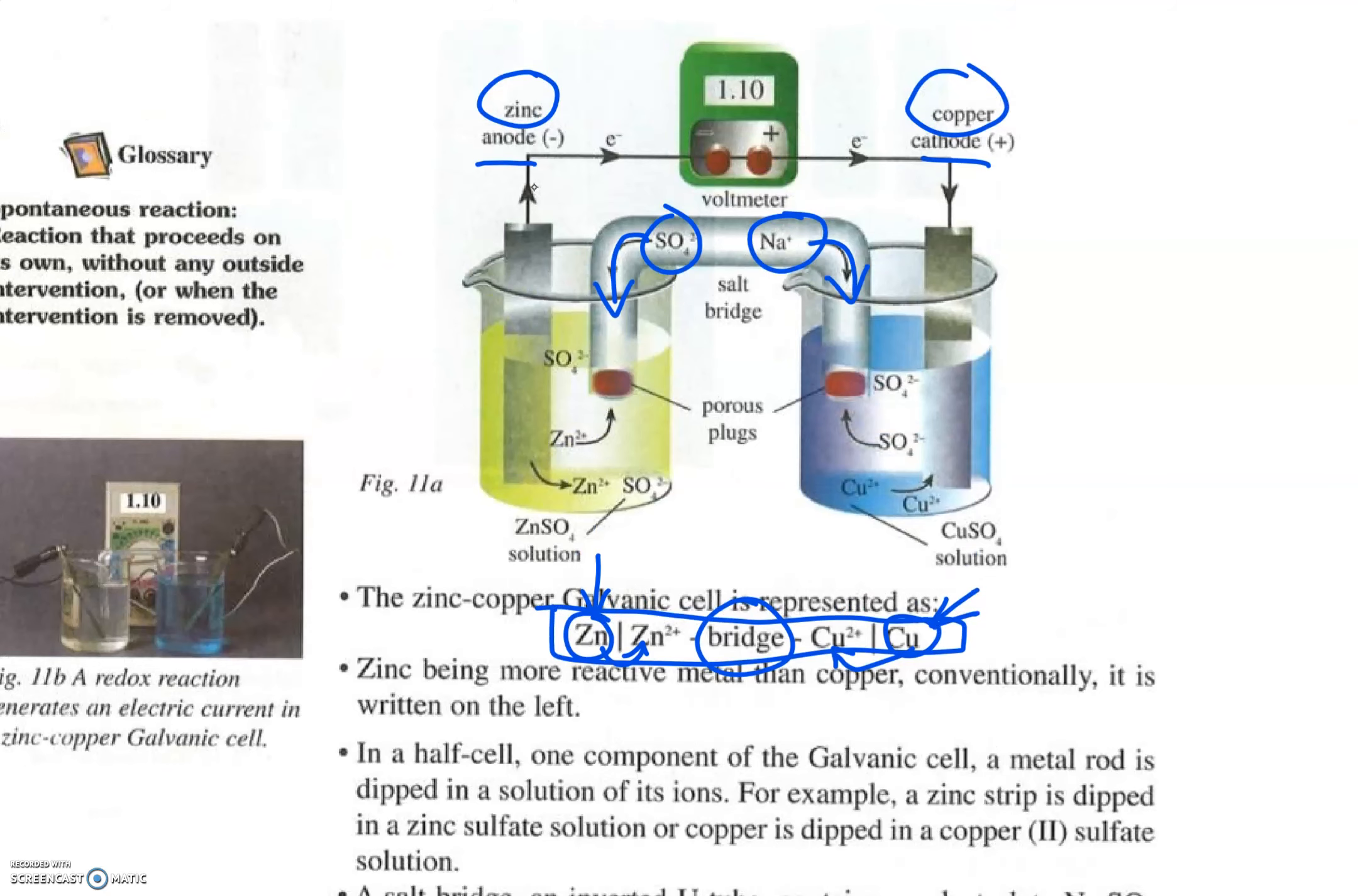We need to know that the direction of the electrons is from the anode to the cathode. However, if we want to find the direction of the current, which is i in physics as we know it in the electric circuits in physics, the direction of i will be the opposite of the direction of the electrons. So even in physics, the intensity goes from the positive to the negative.